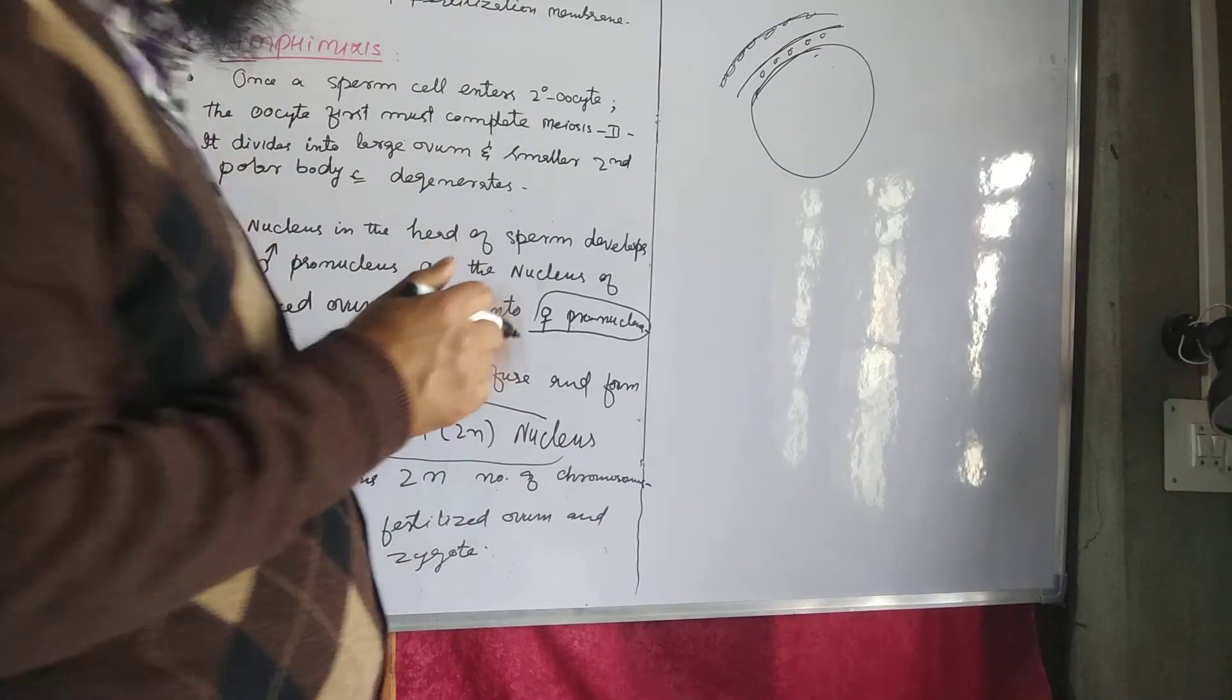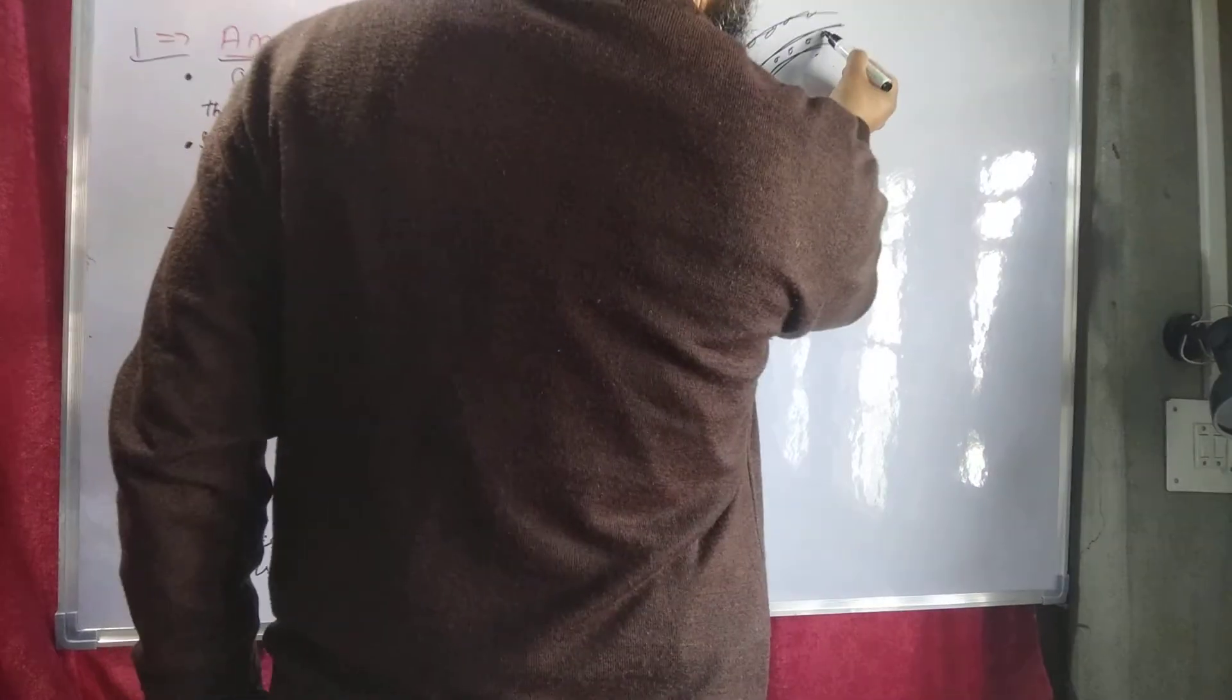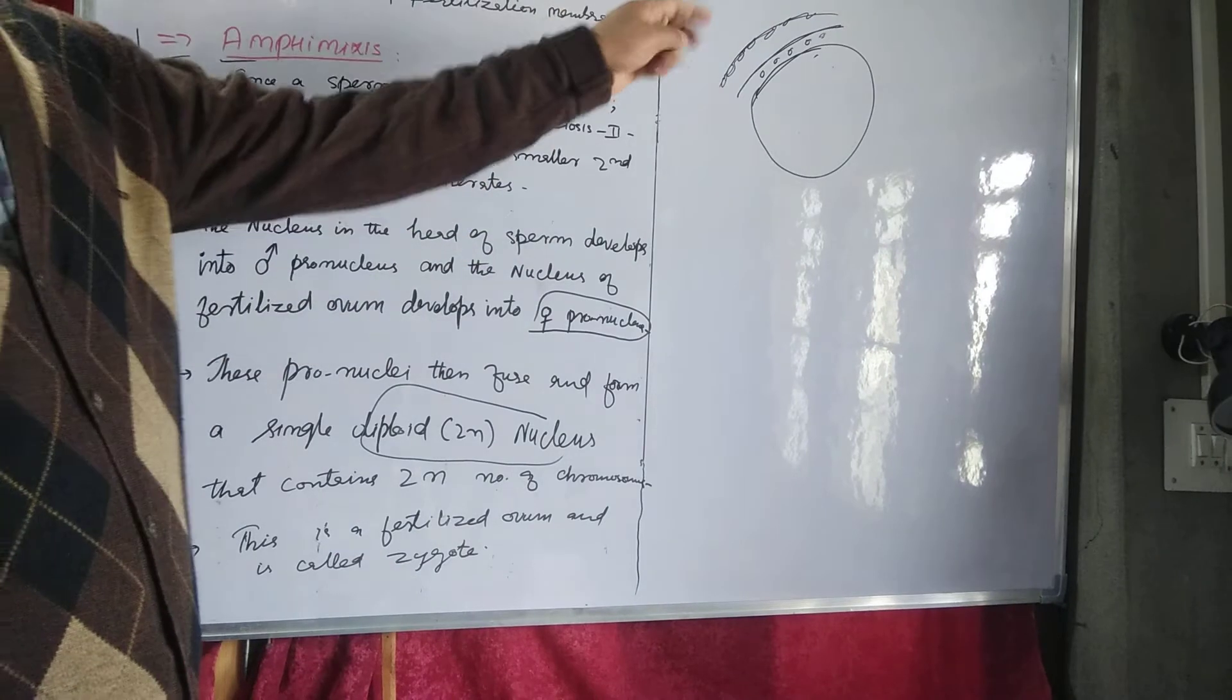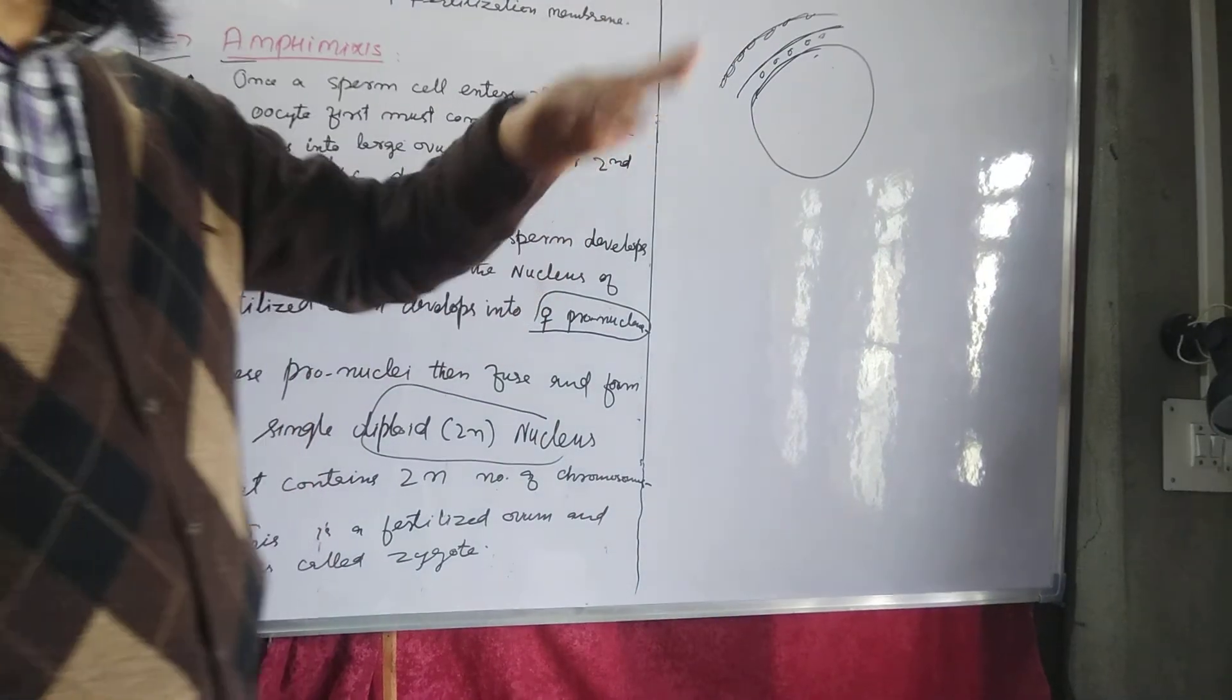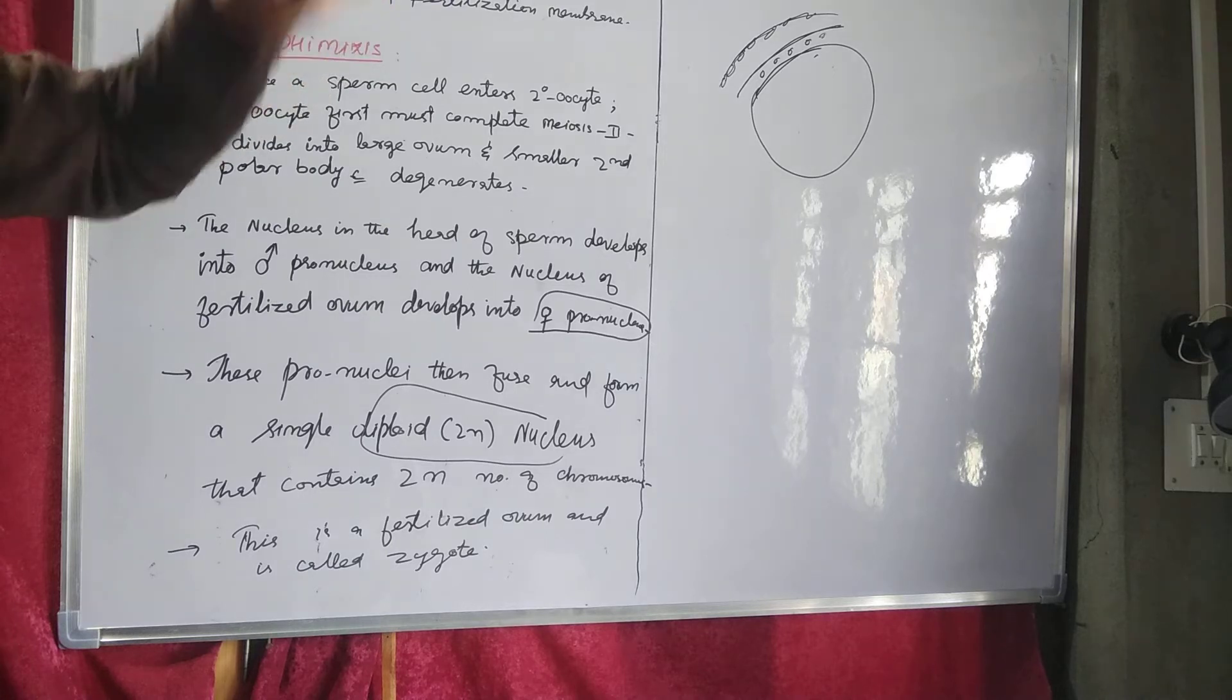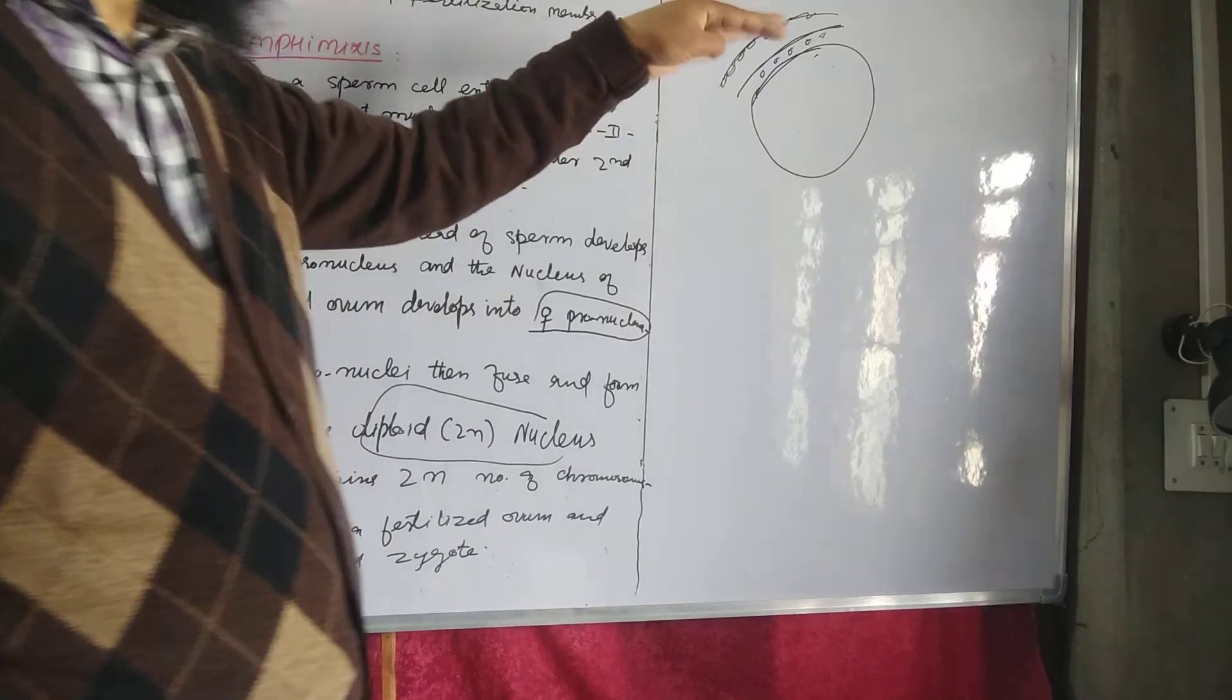So we have to know about cortical reaction. Cortical granules are present and located just beneath the zona pellucida. This is exocytosis. They release enzymes that inactivate the ZP3 receptors.